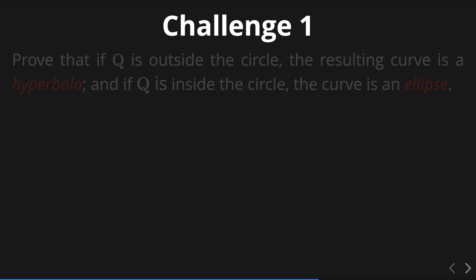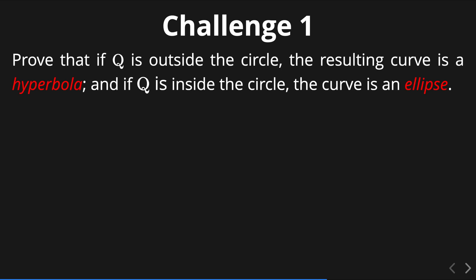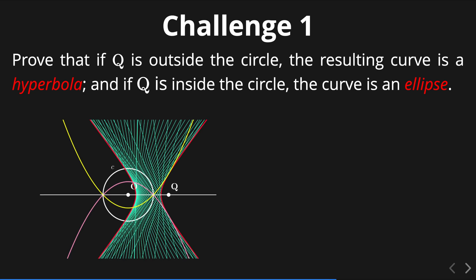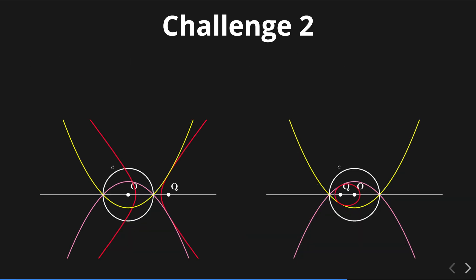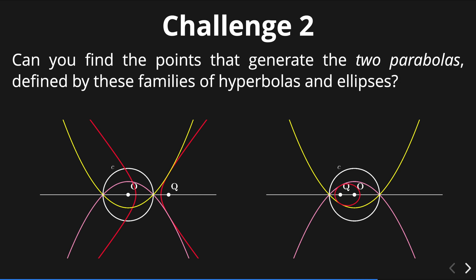Here are a couple of challenges for you. First, try to prove that if Q is outside the circle, the resulting curve is a hyperbola, and if Q is inside the circle, the curve is an ellipse. Second, try to find the points that generate these two parabolas. Here's a hint: draw two auxiliary lines that are tangent to the circle and parallel to the straight line passing through its center and Q.